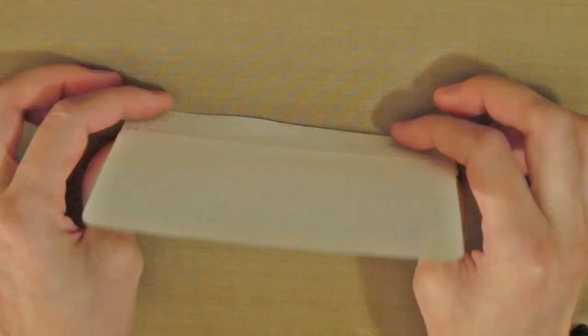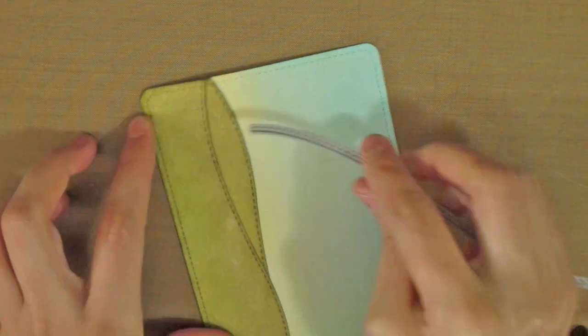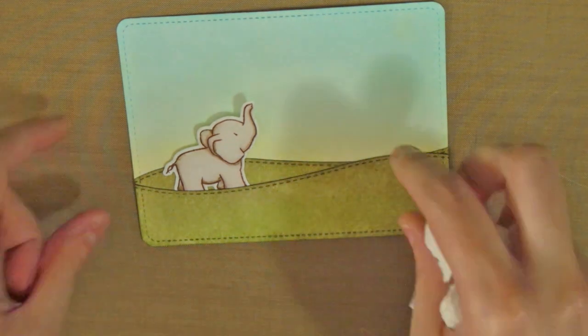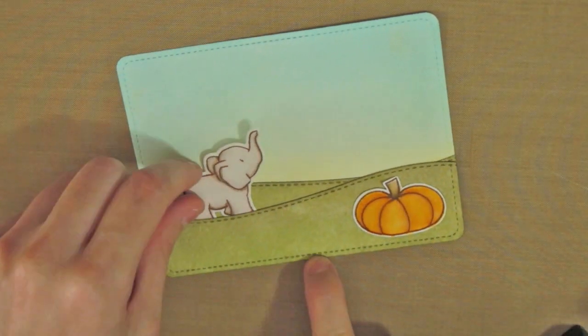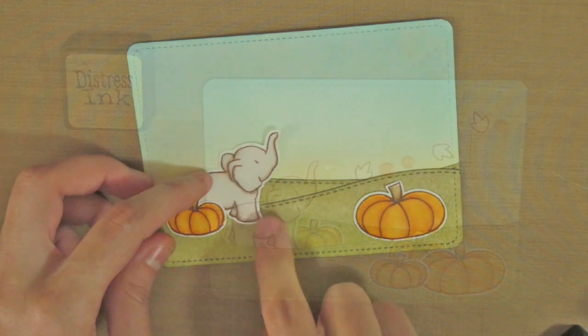Then I can glue the other hill to it. I am using the same die to make sure they have some space on the edge to put my elements in there. Then I will arrange them and glue them to the card.